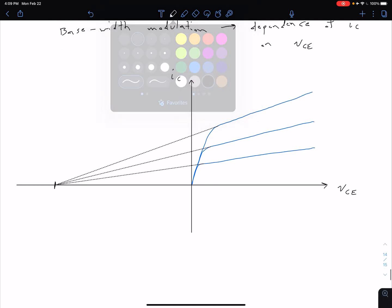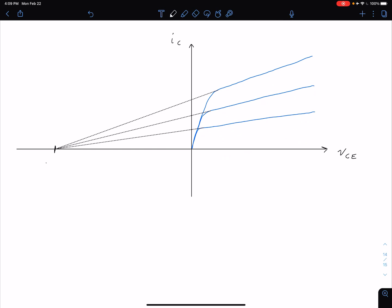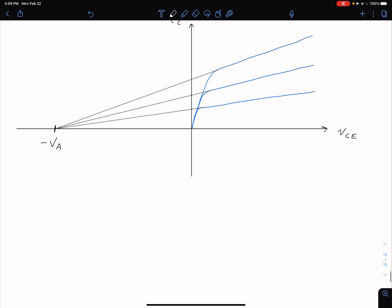This value here where they all intersect the x-axis would be negative VA and the positive value VA is our early voltage.